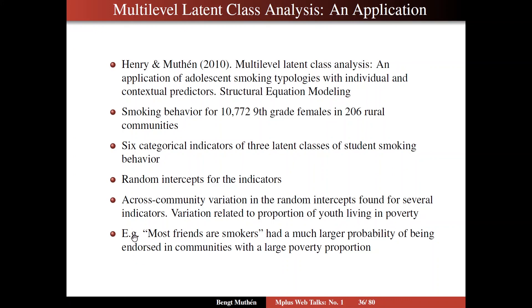For instance, the item 'most friends are smokers' had a much larger probability of being endorsed in communities with a large poverty proportion. So you can have these between-level, level-2 variables influencing the random intercept. And you can think of this variation across communities as a form of measurement non-invariance — in this case, particularly so for 'most friends are smokers.'